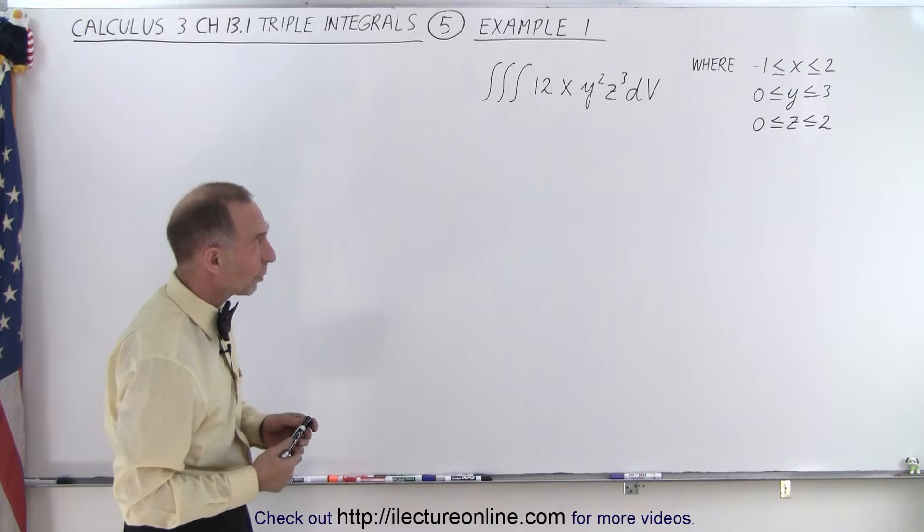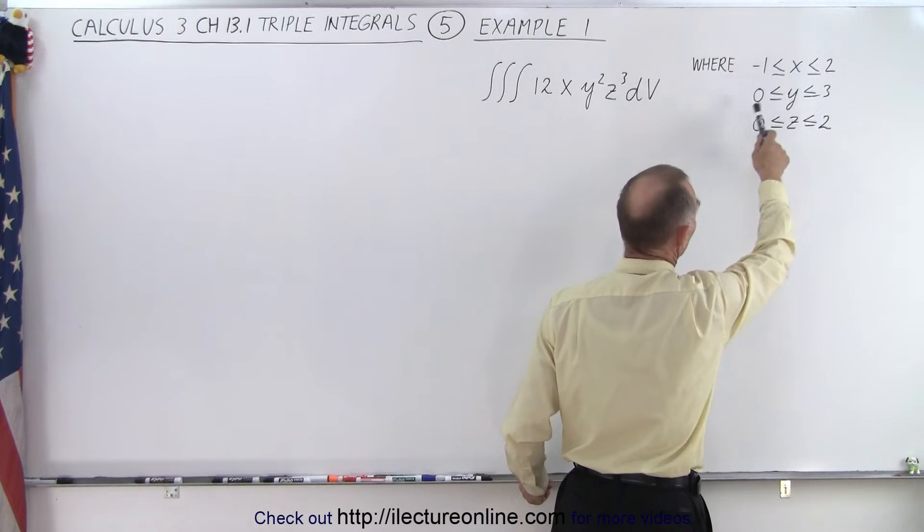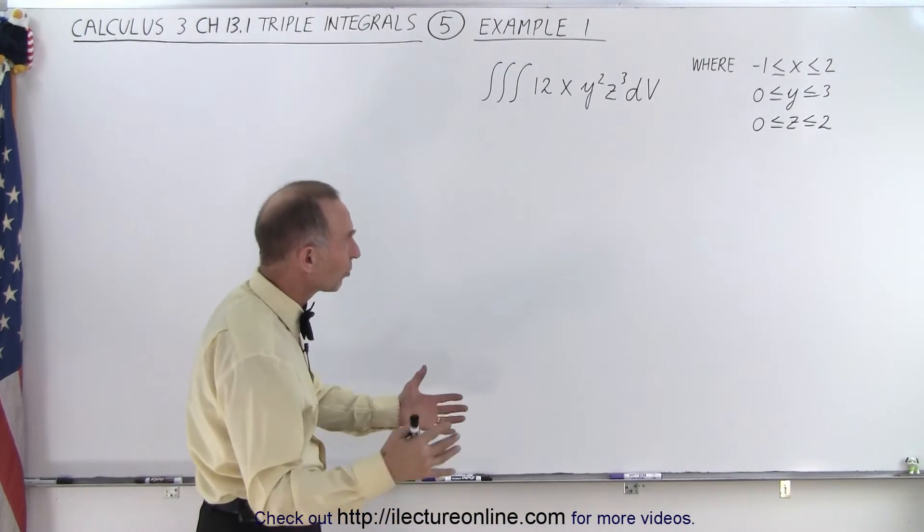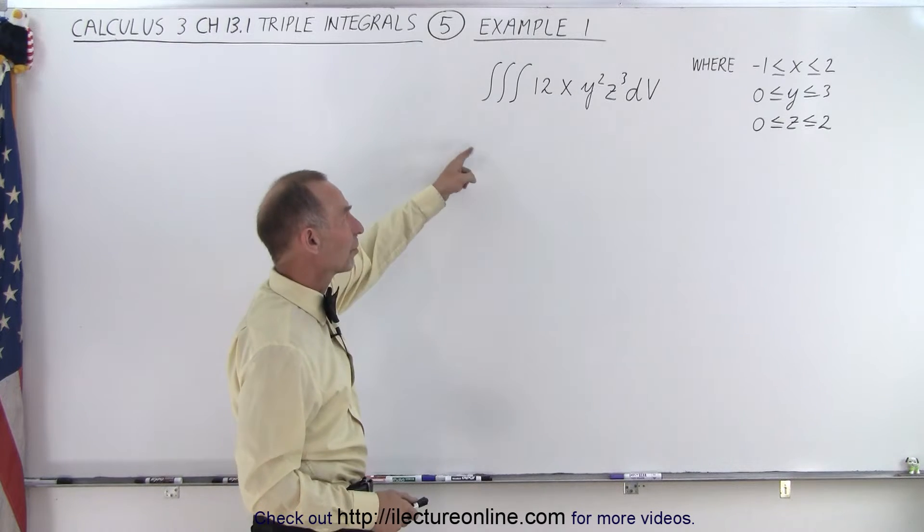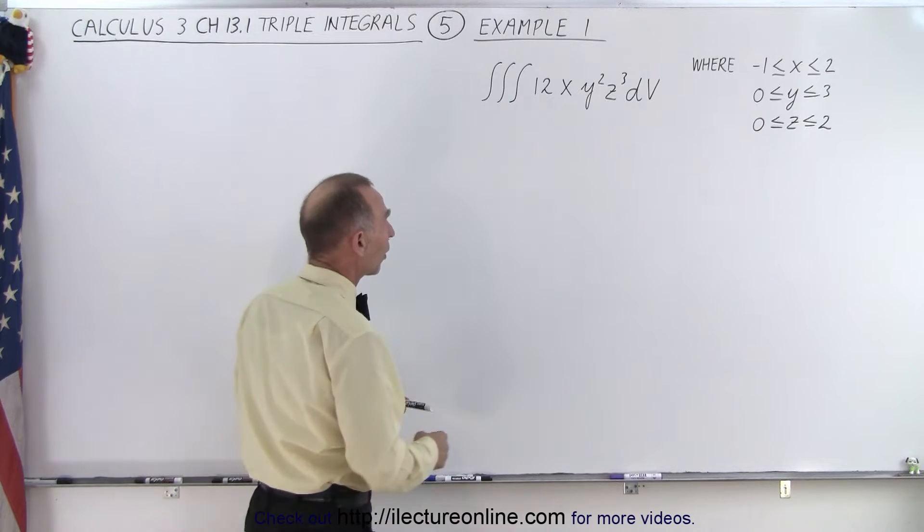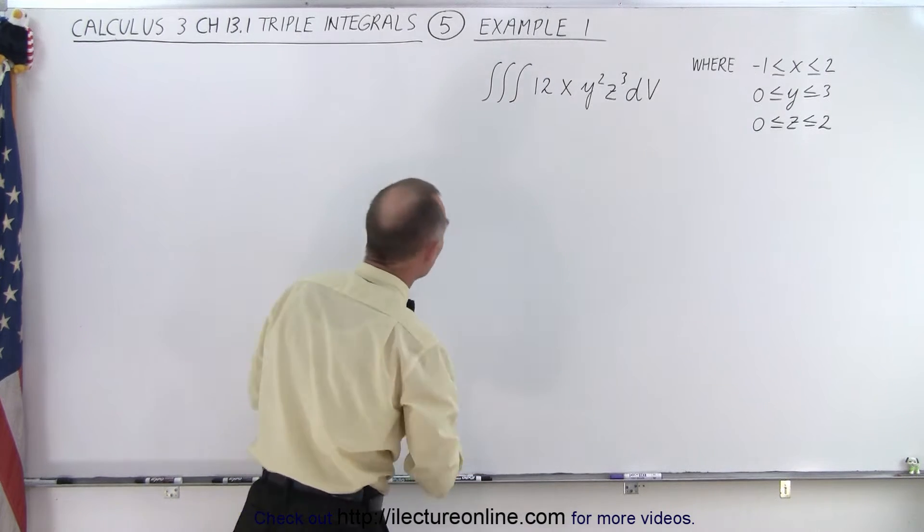But here we start with something simple where we have limits for x, y, and z defined from -1 to 2, 0 to 3, and 0 to 2, which means we're dealing with a volume that is rectangular in shape. So if we're going to integrate this, of course Cartesian or rectangular coordinates are the easiest. Our dV then becomes simply the product of dx dy dz.